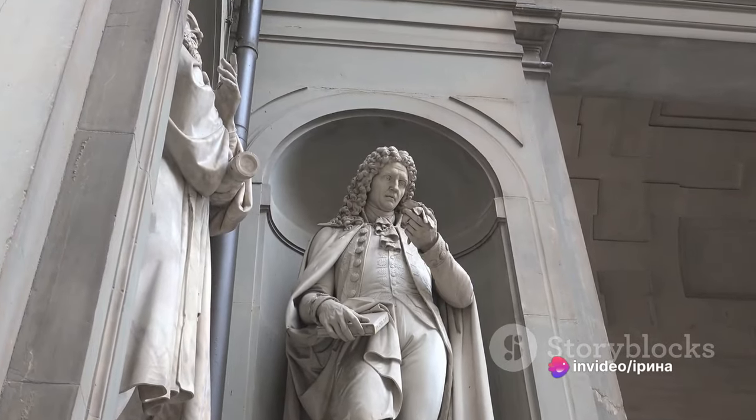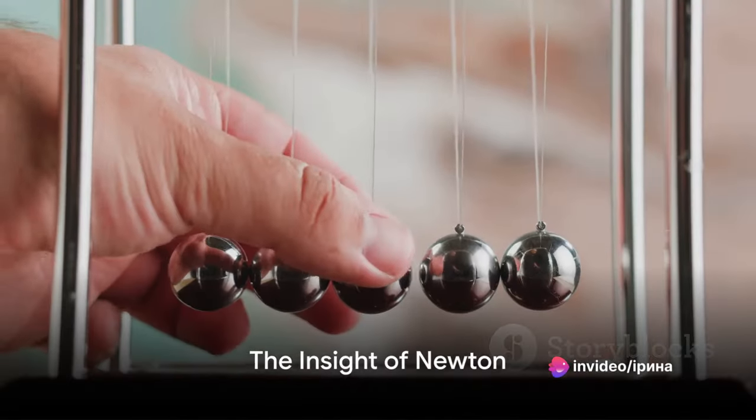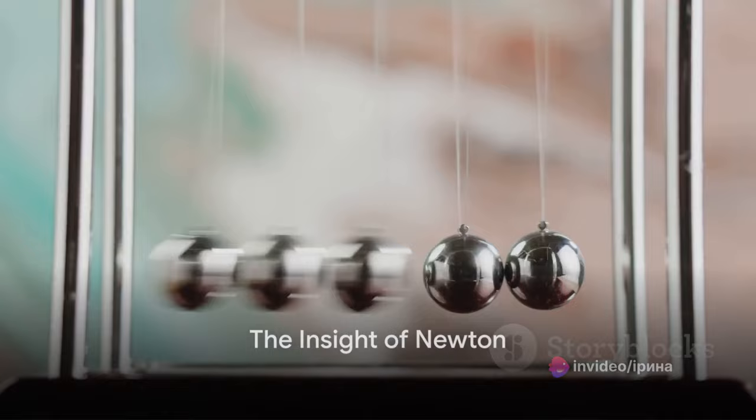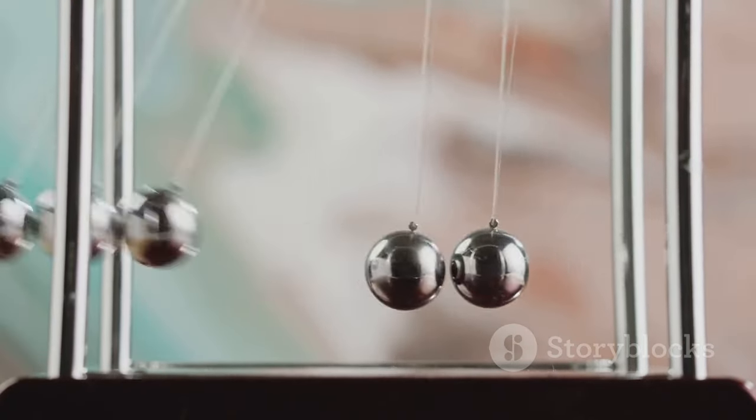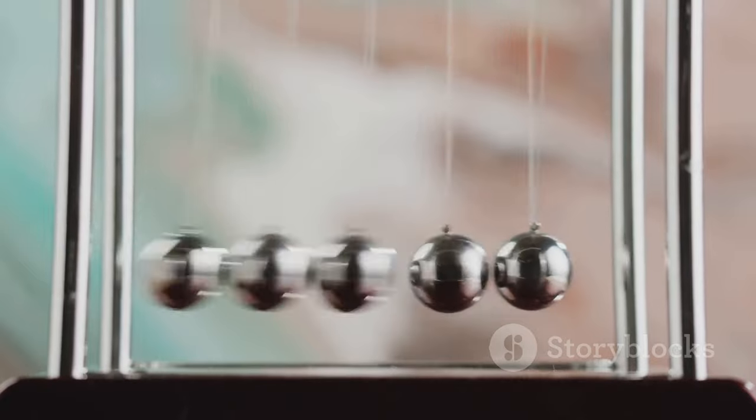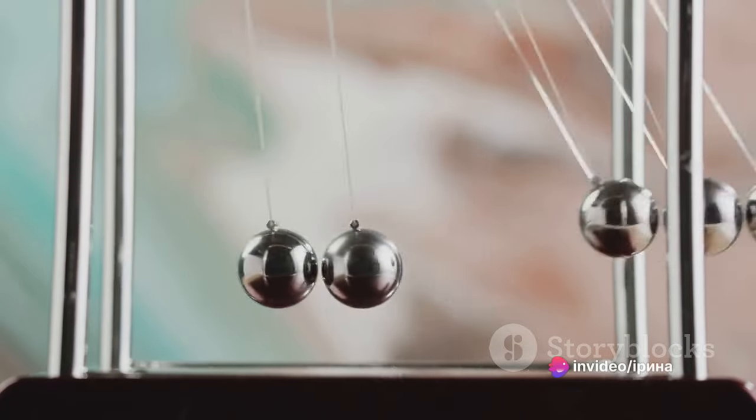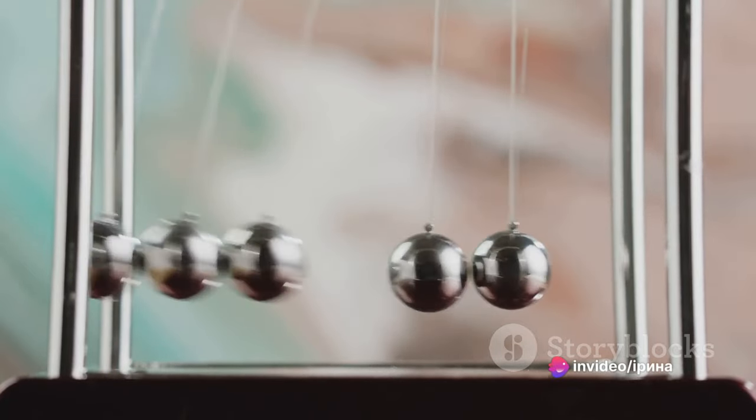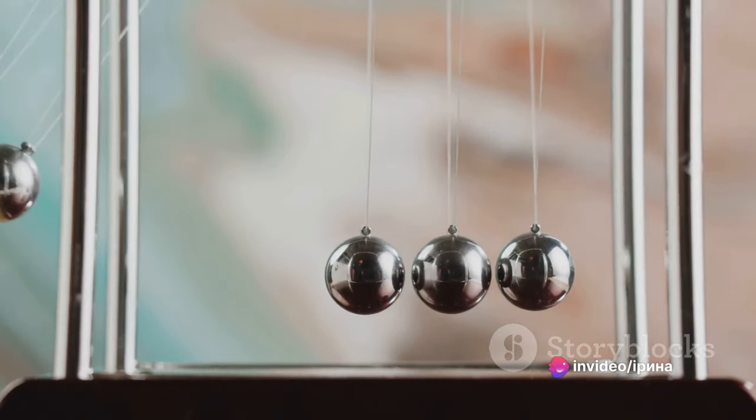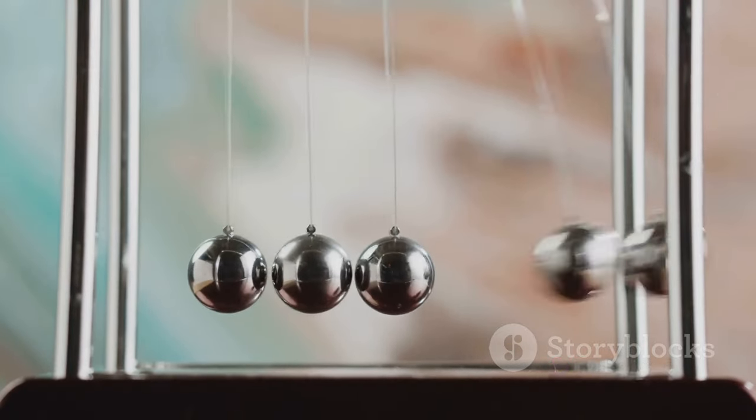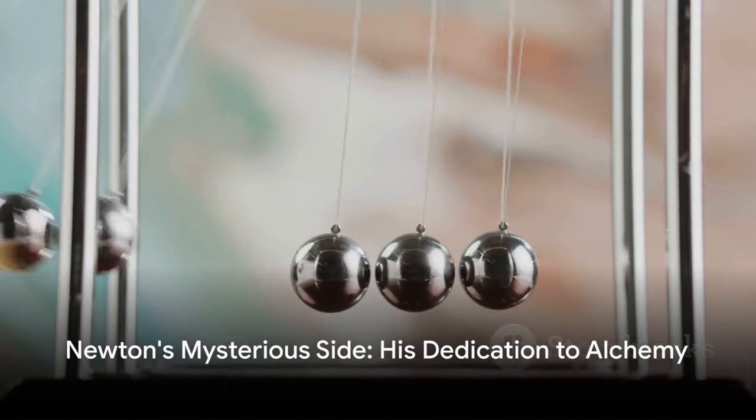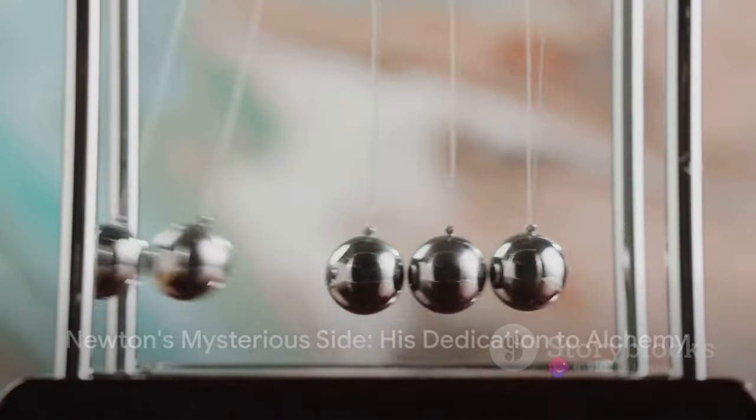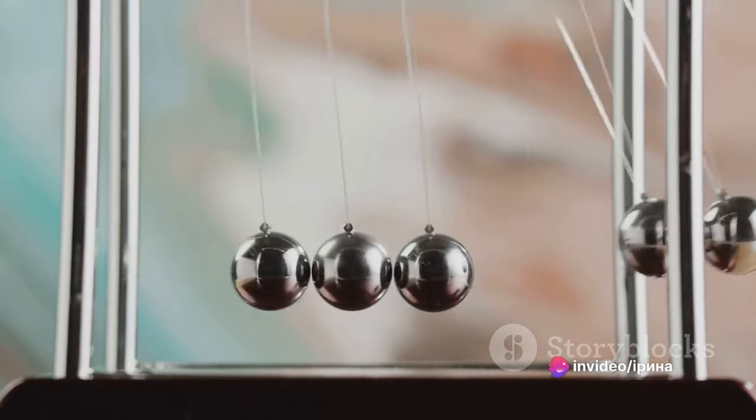From one genius to another we move to Isaac Newton, the man who defined the laws of motion and universal gravitation. Newton's work was nothing short of revolutionary, laying the groundwork for what we now know as classical physics. His laws of motion and universal gravitation are still used today to calculate the trajectory of a rocket or predict the movement of the planets. But Newton had a mysterious side too. He was a dedicated alchemist, spending years experimenting with alchemical processes.